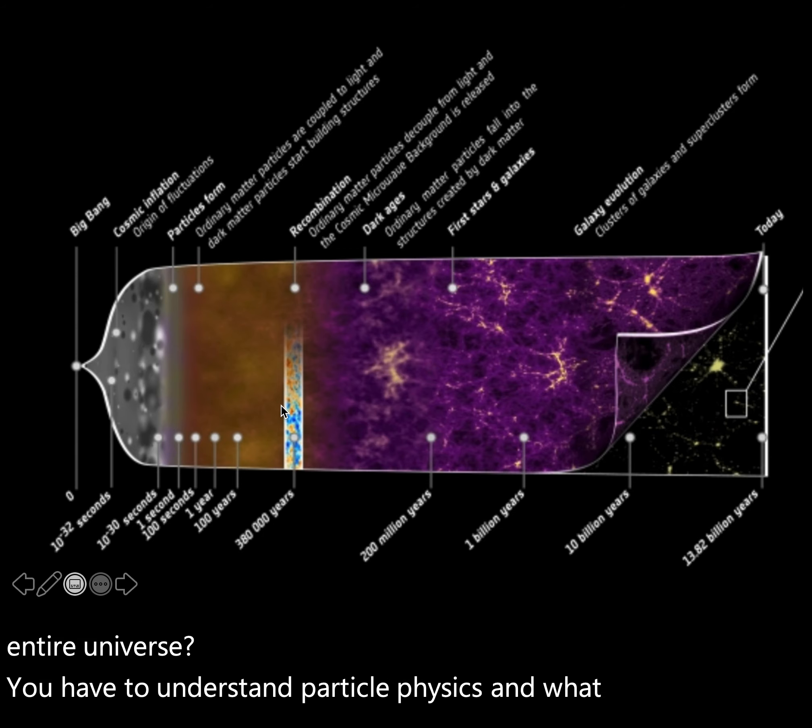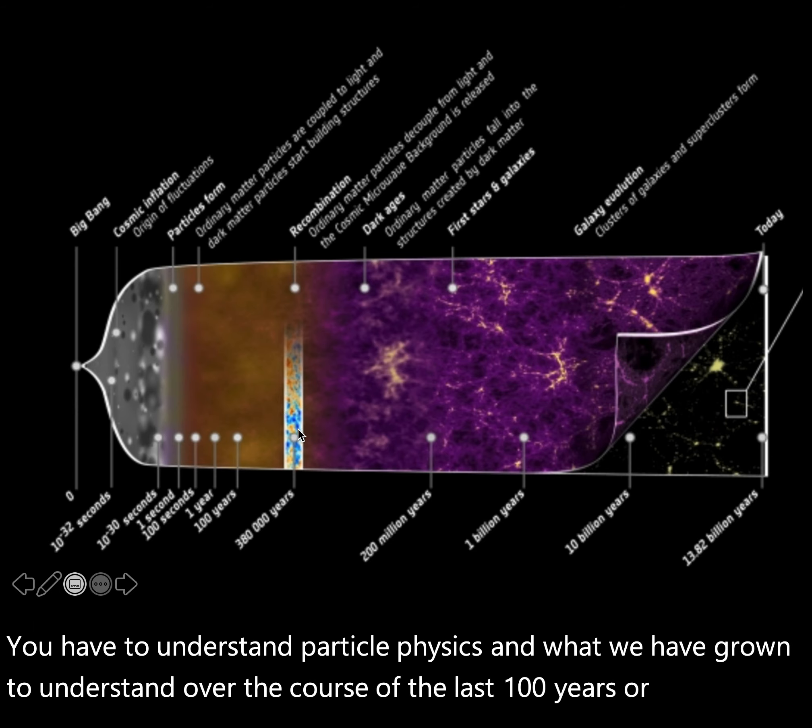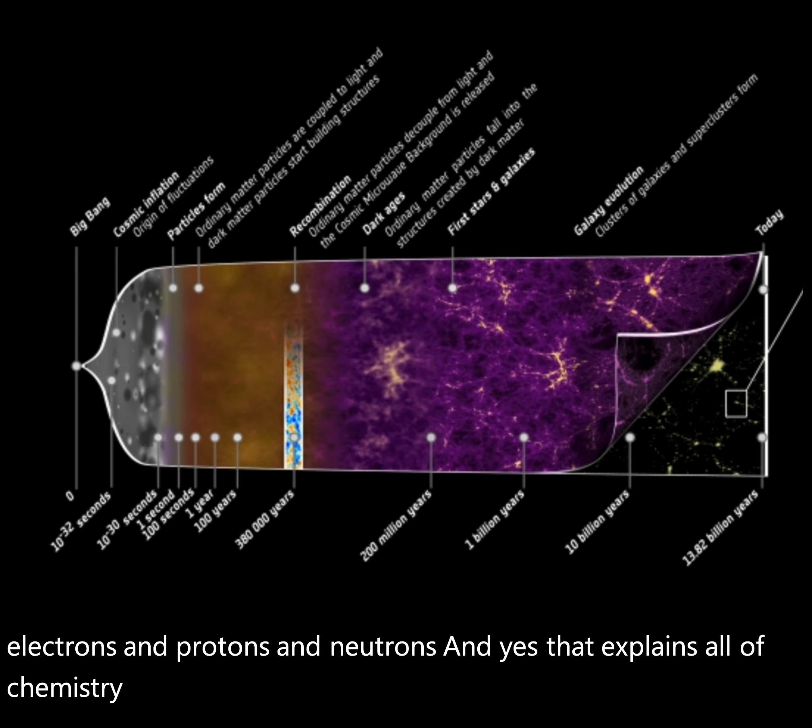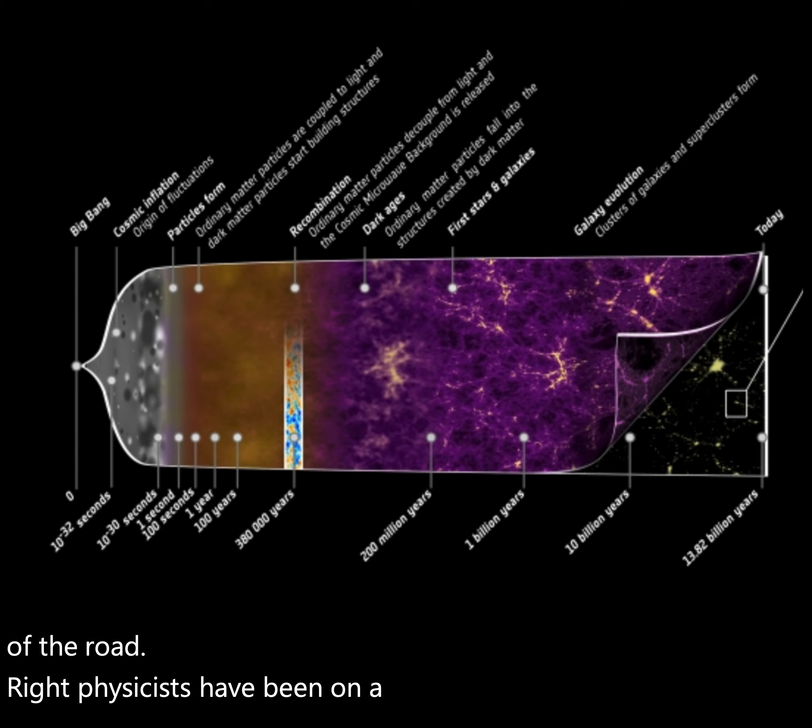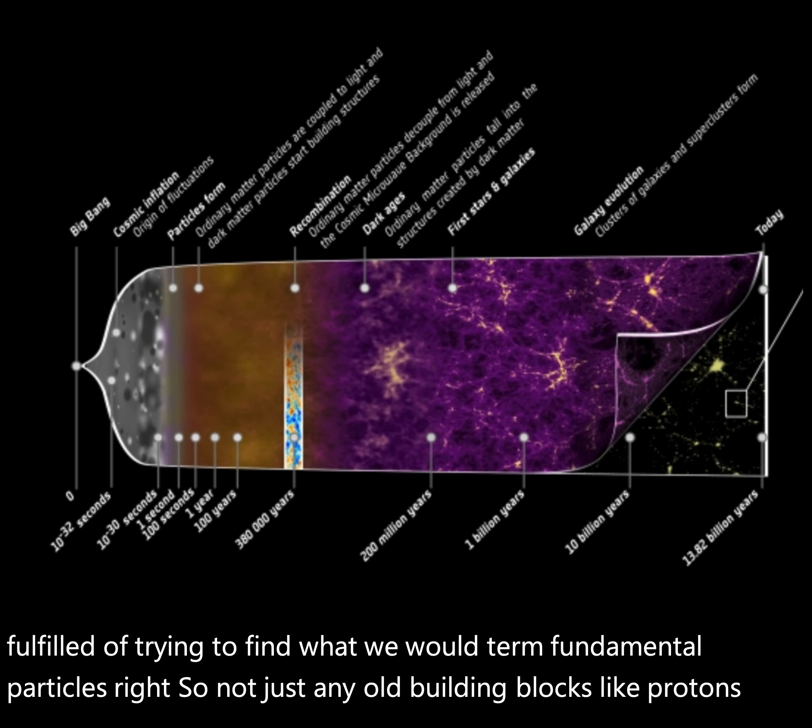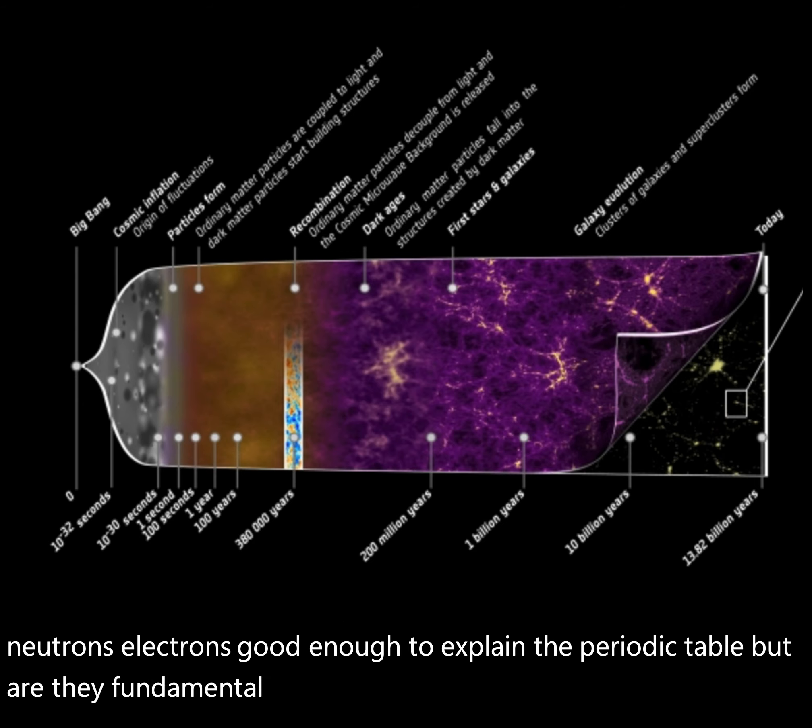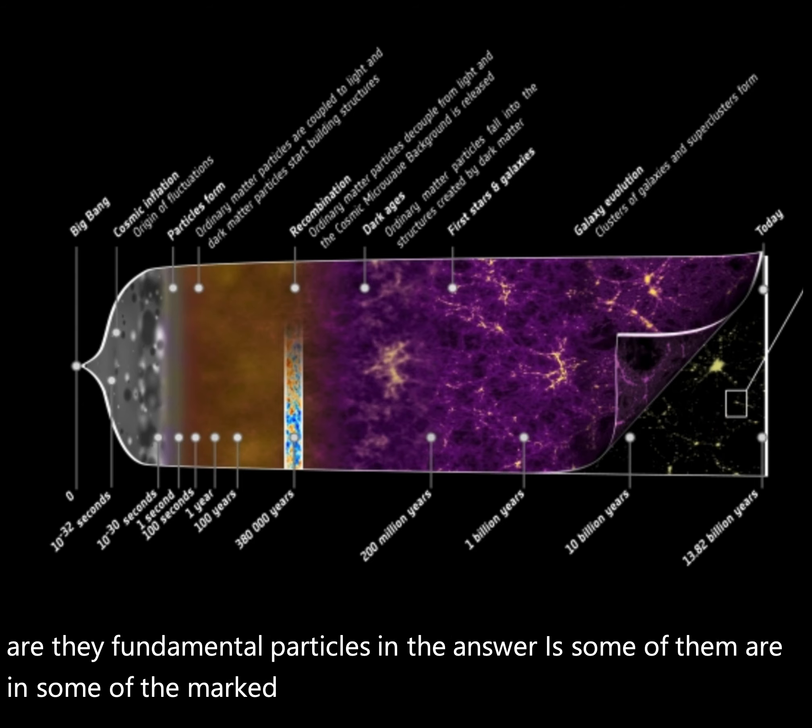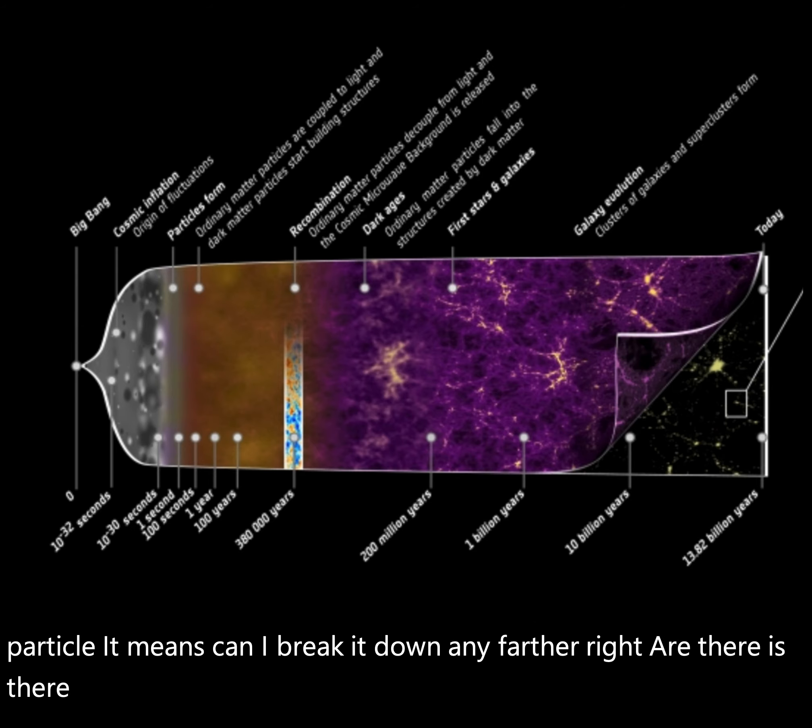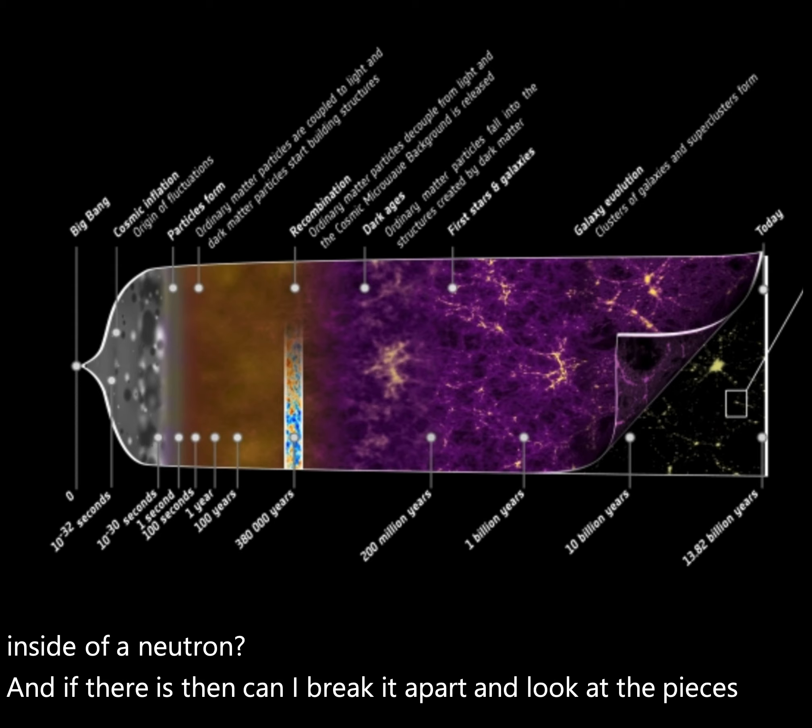What we have grown to understand over the course of the last 100 years or so is that yes, things are made out of atoms, and yes, those atoms are made out of electrons and protons and neutrons, and yes, that explains all of chemistry and a lot of nuclear physics, but that's not the end of the road. Physicists have been on a quest, which has pretty much been fulfilled, of trying to find what we would term fundamental particles. Not just any old building blocks like protons, neutrons, electrons, good enough to explain the periodic table, but are they fundamental particles? And the answer is some of them are and some of them aren't. What do I mean by a fundamental particle? It means can I break it down any farther. Is there internal structure inside of an electron, inside of a proton, inside of a neutron?